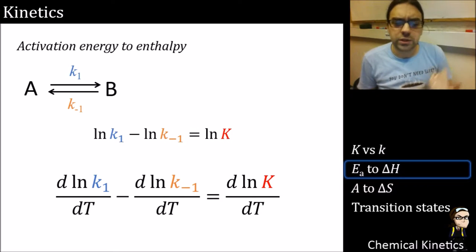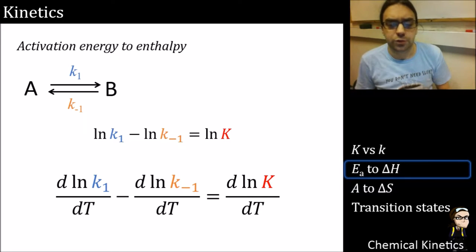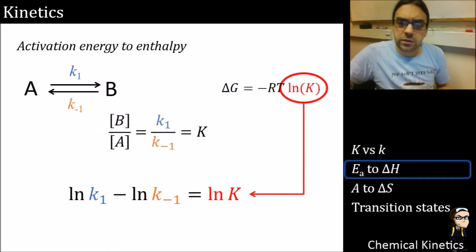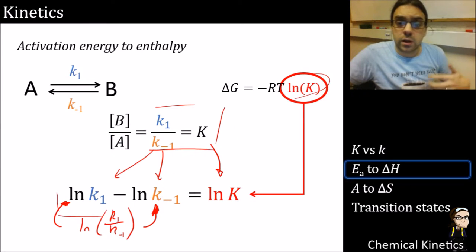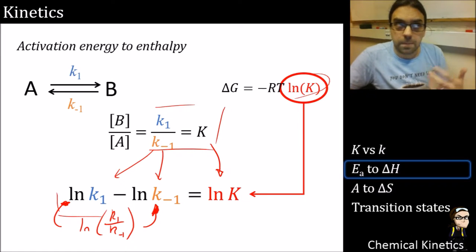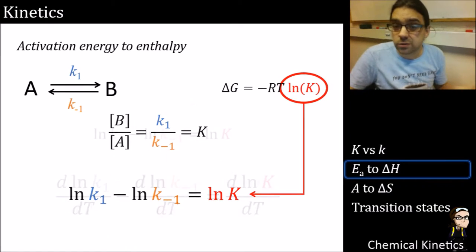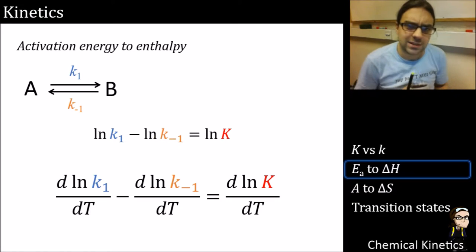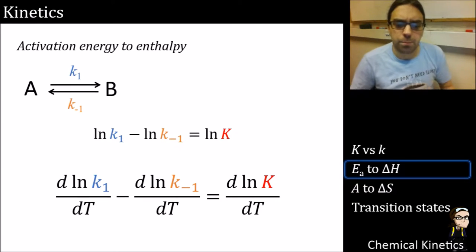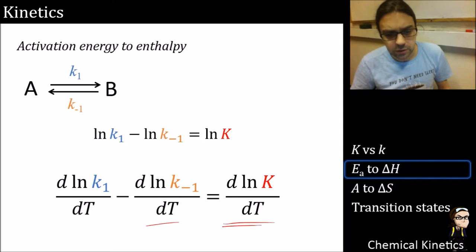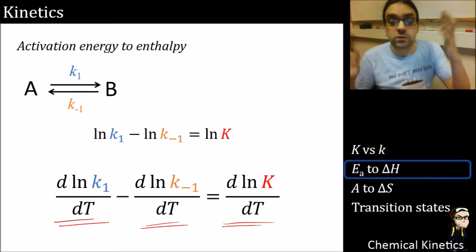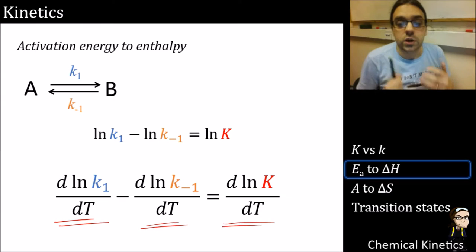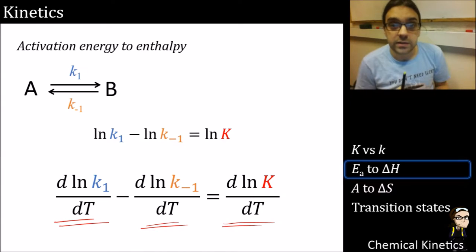The next step - differentiating with respect to temperature - might seem obscure. But notice that T appears in the delta G equation, so delta G is a function of the equilibrium constant and temperature. We differentiate with respect to T, giving a new equation, and then start substituting in the different components.